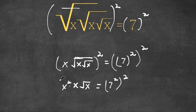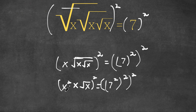Once again, to cancel out the final square root, I'm going to square both sides. So now we have x to the power of 4 times x squared times x.